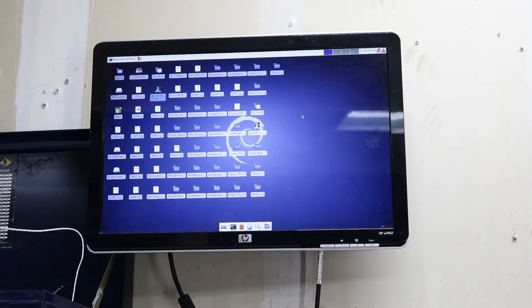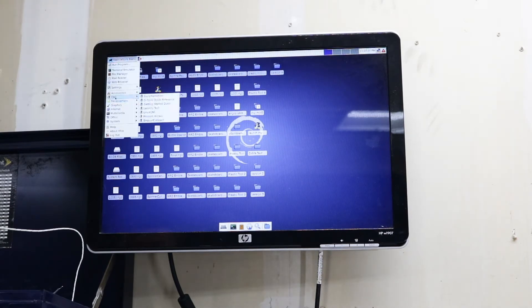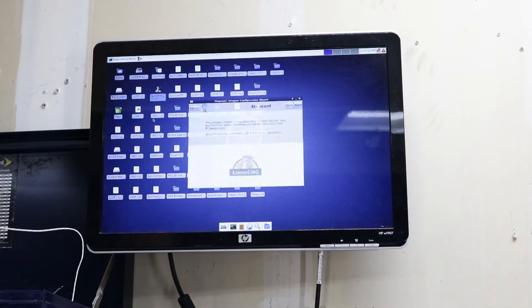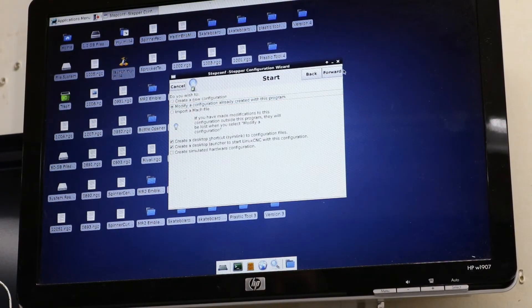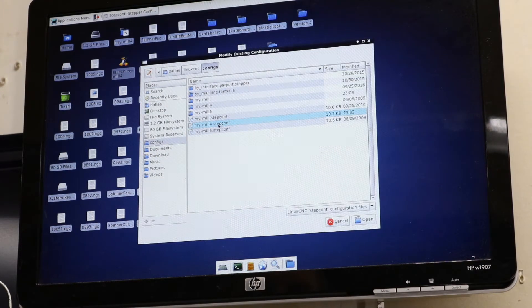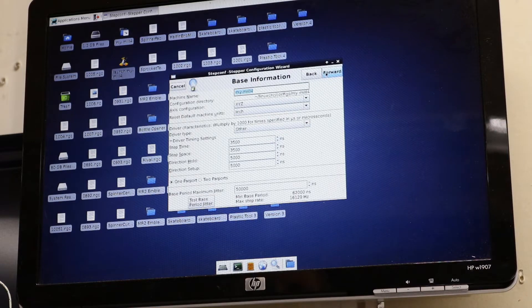Alright, so first of all, you can see my screen right here and a million icons. I'm terrible about that, but the main thing I want to do is go into the step config wizard. Hit start. I'm going to modify an existing one. Mine is my mil four because I don't like to name things with things I can remember.